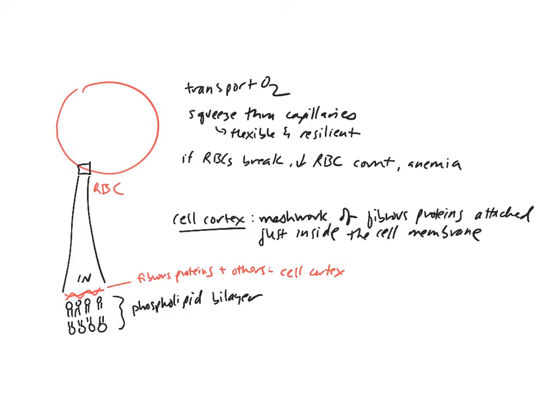The example in this lecture is all about red blood cells. However, the cell cortex is found in essentially all animal cells. We're just using red blood cells as an example.